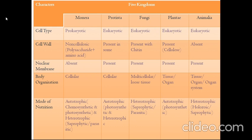Next is nuclear membrane, which is absent in the case of Monera and present in the other four kingdoms. Body organization of Monera and Protista kingdoms are cellular, because they are mostly unicellular. Fungi, Plantae, and Animalia have tissue, organ, and organ system, because they are multicellular.